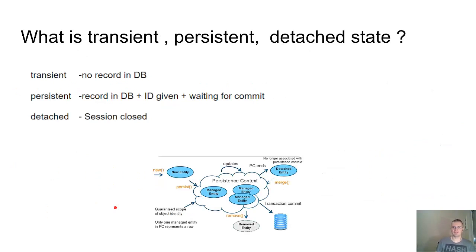What is transient, persistent, and detached state? The transient state is when the entity class is not associated with a Hibernate session, so there is no record in the database. Persistent is a state when the entity class is associated with the Hibernate session. So the record is in the database, the ID is already given and we are waiting for the commit of this object to the database. The detached state is a situation if we close the session. We can still modify this object and reattach it to the new session.